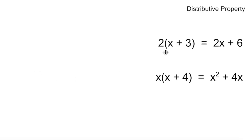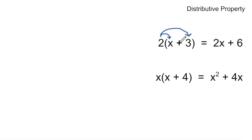In the distributive property, we can multiply a constant times a binomial — 2 times (x plus 3). We multiply this 2 times the first item inside the parentheses, the x, and that gives us 2x. And then we multiply the 2 by the second item in parentheses, which is the 3. So 2 times 3 gives us 6. When we distribute the 2, we're going to multiply that 2 by each of the two separate terms inside of the parentheses.